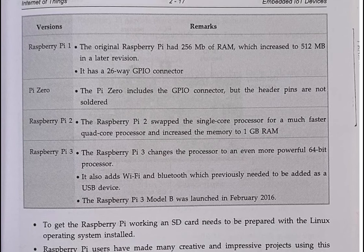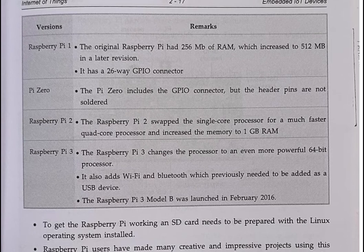Then the Raspberry Pi 2 was developed. It upgraded from a single-core processor to a much faster quad-core processor and increased the memory to 1 GB RAM. So now processing power and RAM were both significantly increased.